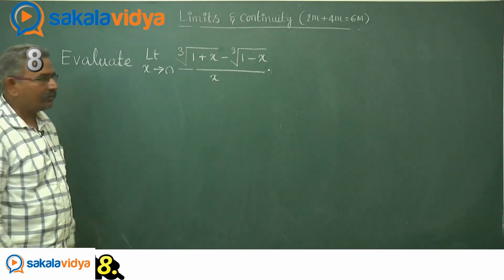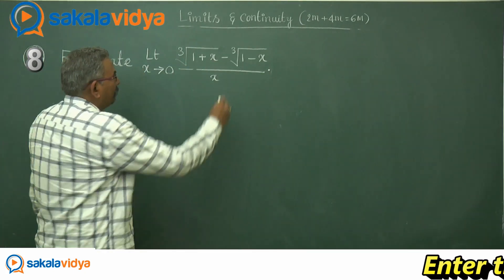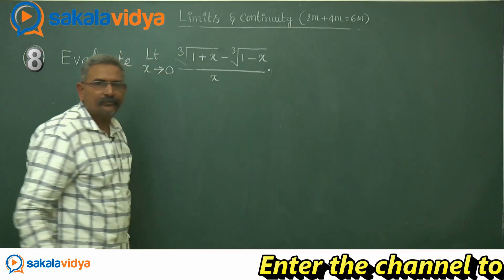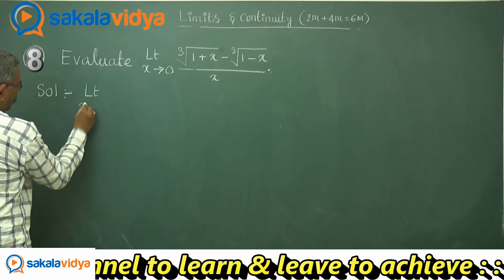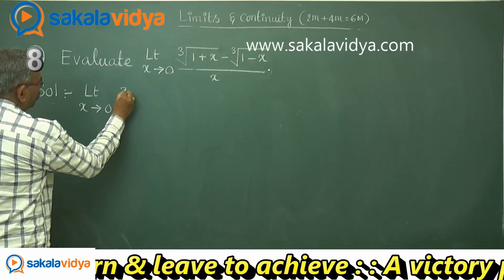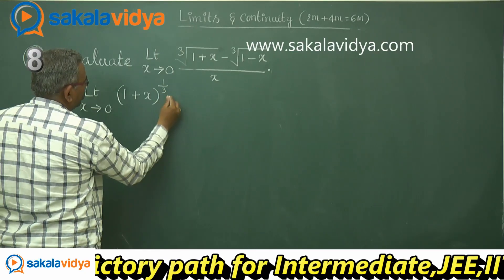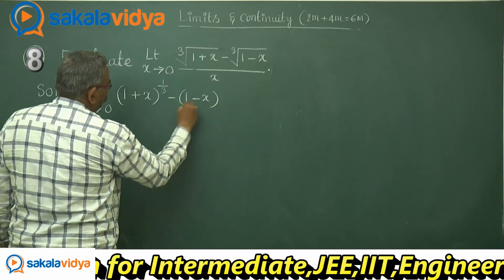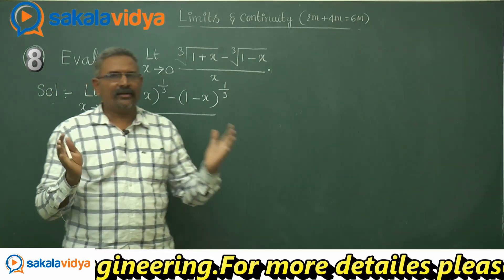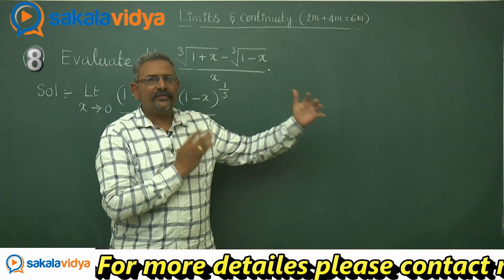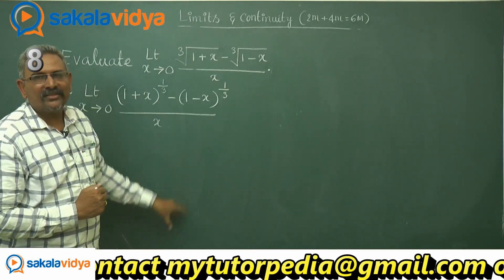Let us solve another problem. Evaluate limit x tends to 0, cube root of (1+x) minus cube root of (1-x), upon x. This can be written as (1+x)^(1/3) minus (1-x)^(1/3) divided by x. For competitive entrance examinations, this is very simple: 1/3 plus 1/3 gives the answer 2/3.